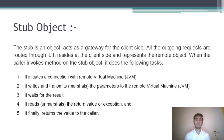Stub object: The Stub is an object that acts as a gateway for the client side. All outgoing requests are routed through it. It resides at the client side and represents the remote object. When the caller invokes a method on the Stub object, it does the following tasks: it initiates a connection with the remote virtual machine, it writes and transmits the parameters to the remote virtual machine, it waits for the result, it reads the return value or exception, and it finally returns the value to the caller.